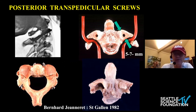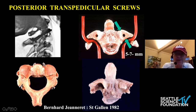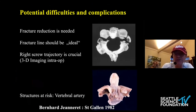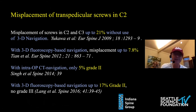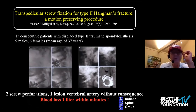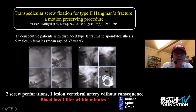What about transpedicular screws — placing screws across the fracture site as advocated by Judea? This is an elegant technique, but the problem is it still leaves the C2-C3 disc space open. There is a potential complication of vertebral artery injury, especially with a high-riding VA groove as seen here. There have also been issues with proper placement of the C2 screws, and navigation has been advocated by many authors to help. One case reported severe blood loss from a vertebral artery injury.